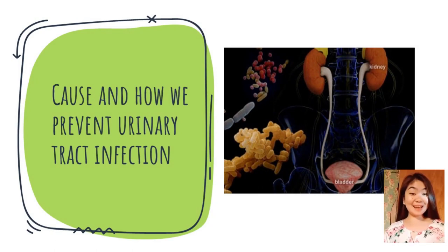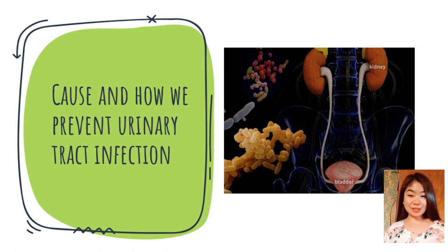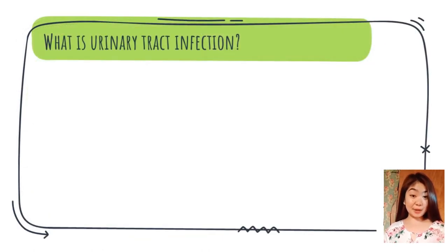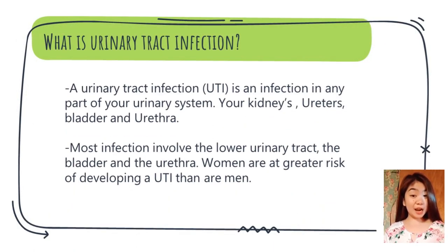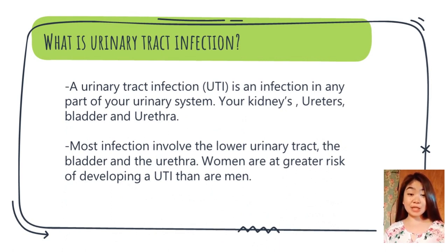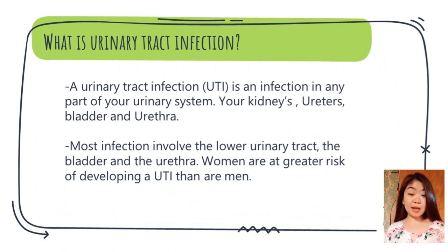Good day everyone. I am Giselle Bonagortega and I will discuss urinary tract infections (UTI) — their causes and prevention. A urinary tract infection is an infection in any part of the urinary system: the kidneys, ureters, bladder, and urethra. Most infections involve the lower urinary tract — the bladder and the urethra.